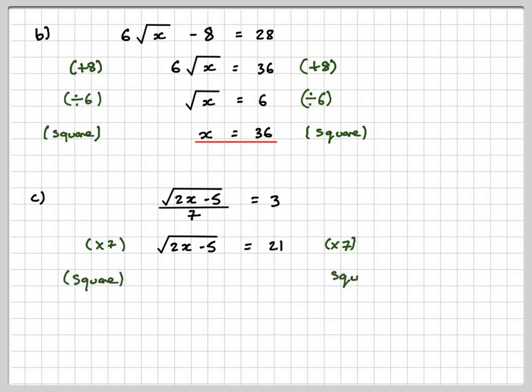Square both sides. If we square both sides, this side gets 2x minus 5. And if we square 21, we get 441.